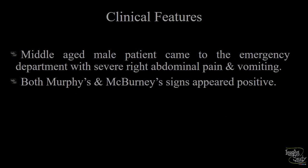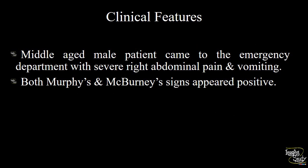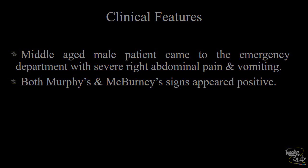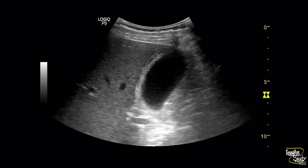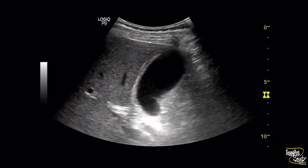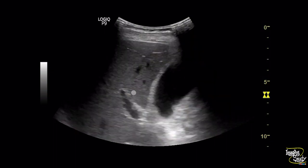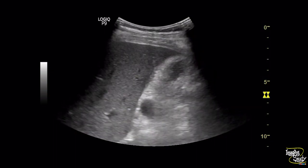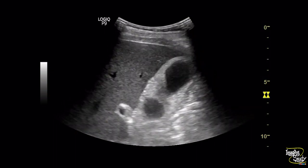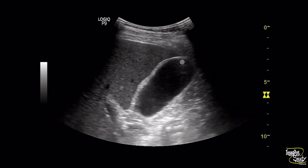Let's start case number two. A Middle Eastern male patient came to the emergency department with severe right abdominal pain and vomiting. The patient had both Murphy's and McBurney's signs positive. Here you can see the gallbladder of this patient — the wall appears thickened and edematous, and the lumen doesn't look distended.